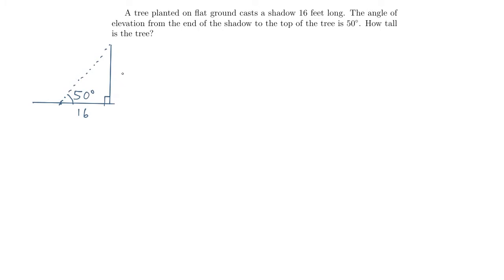All we have to do is figure out how tall the tree is — in other words, what is this distance b? Let's think of a trig function that relates b, 16, and 50. Tangent is opposite over adjacent. So tangent of 50 degrees will be equal to the opposite side, b, divided by the adjacent side which has length 16.